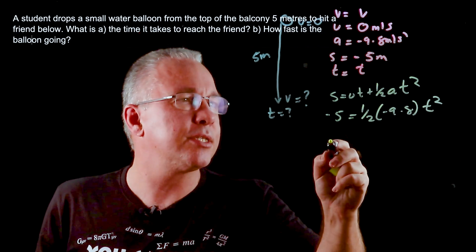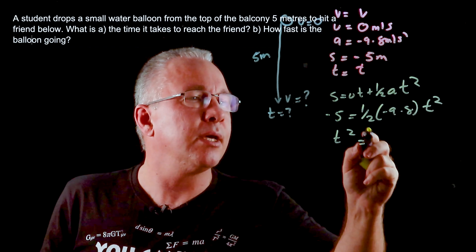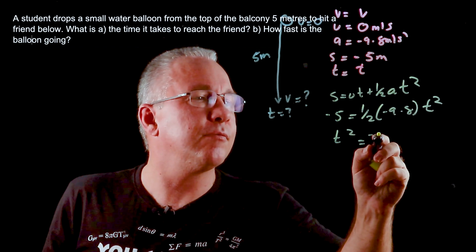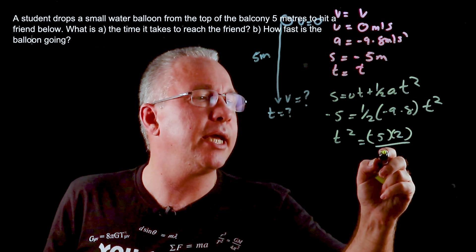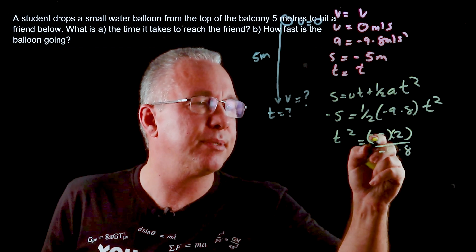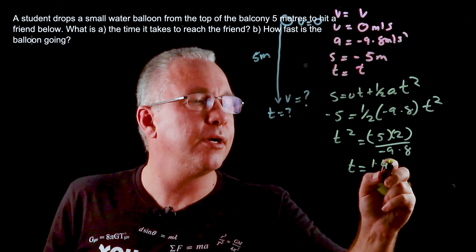You've got negatives on both sides, so T² = (-5 × 2) / (-9.8). These negatives cancel and become positive, so T = 1.43 seconds.